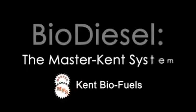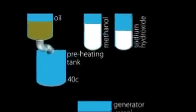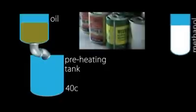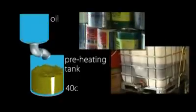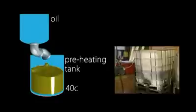Right, let's look at the stages involved in producing biodiesel from vegetable oil using the Master Kent system. The oil to be converted is transferred into a preheating tank and warmed to 40 degrees centigrade. This aids the chemical process and lets any contaminating water fall out.